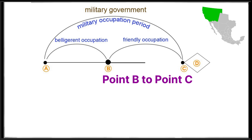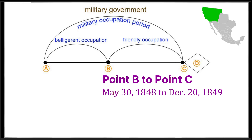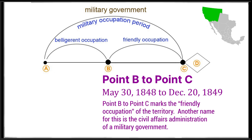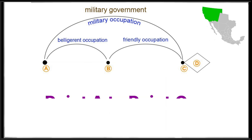Point B to Point C: May 30, 1848 to December 20, 1849. Point B to Point C marks the friendly occupation of the territory. Another name for this is the civil affairs administration of a military government.